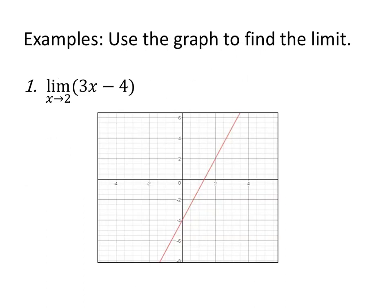All right, so let's use the graph to find the limit. For all of these graphs, I use desmos.com. It's a free online graphing utility. It is fabulous. They even have an app that you can download and put on your phone. You can have a graph at your fingertips pretty quickly. So the limit as x approaches 2 of 3x minus 4. 3x minus 4 is the function that I've graphed here. You see the y-intercept, negative 4. The slope is 3.